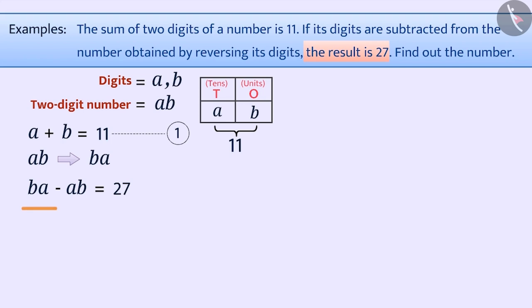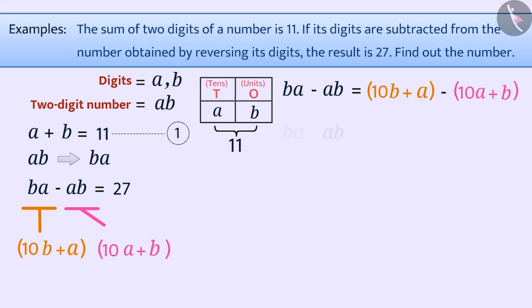We can write BA in general form as 10B plus A. Similarly, AB can be written as 10A plus B in its general form. This will give us BA minus AB is equal to 10B plus A minus 10A plus B, which is equal to 10B minus B plus A minus 10A. That is, BA minus AB is equal to 9B minus 9A.